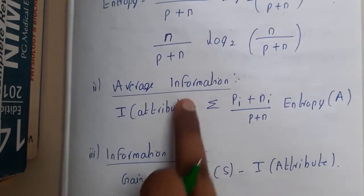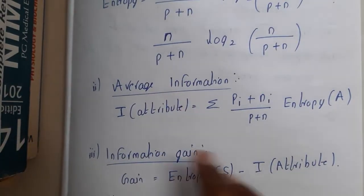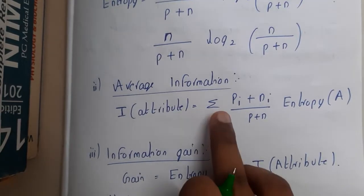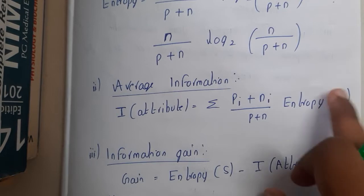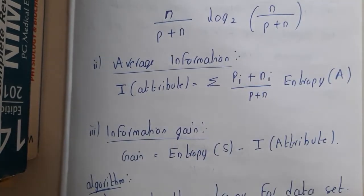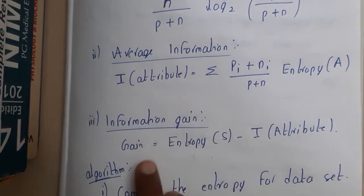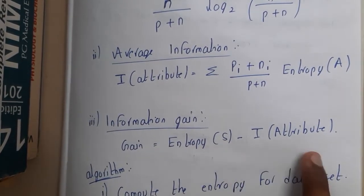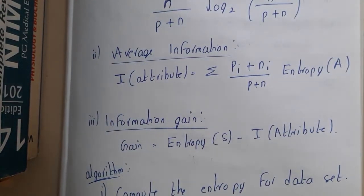Once you get the entropy, the second formula is average information gain, denoted I(attribute). It is the summation of (Pᵢ + Nᵢ) / (P + N) times the entropy of each subset. Information gain = Entropy(S) − I(attribute). So basically, you subtract I(attribute) from the full table entropy to get the information gain.